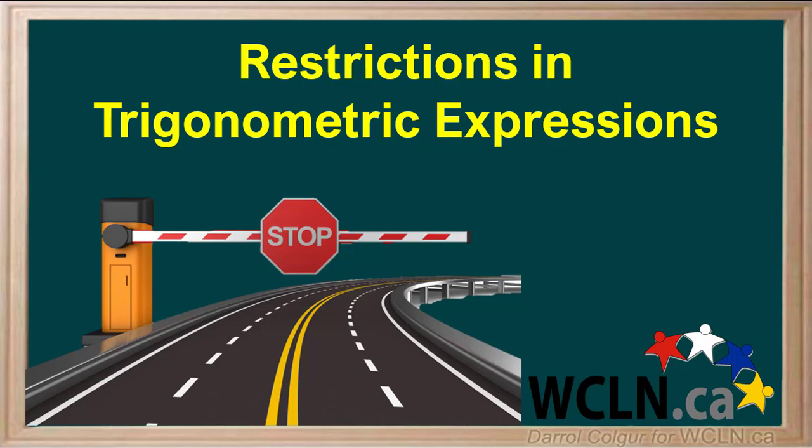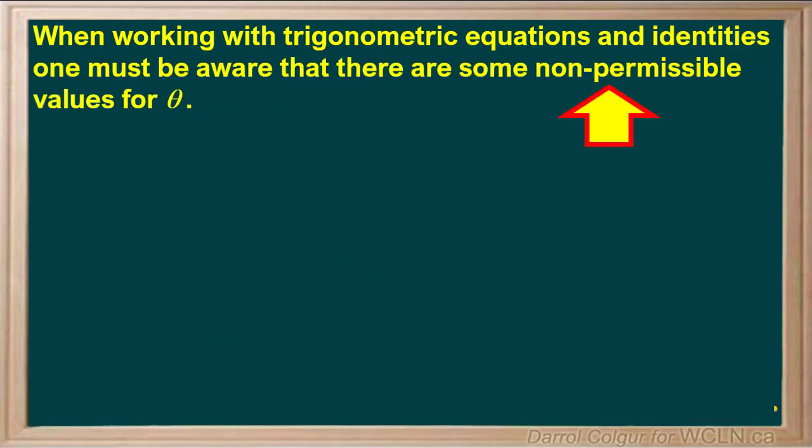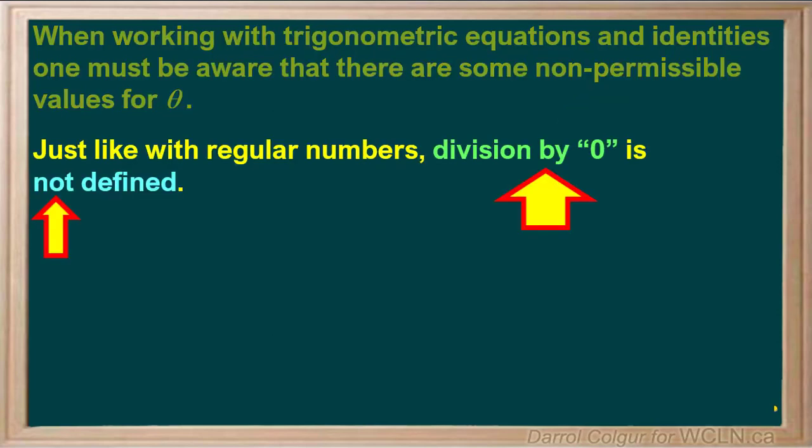A trigonometric equation or identity is not necessarily valid for all possible angles. There are some restrictions. When working with trigonometric equations and identities, one must be aware that there are some non-permissible values for theta. Just like with regular numbers, division by zero is not defined.